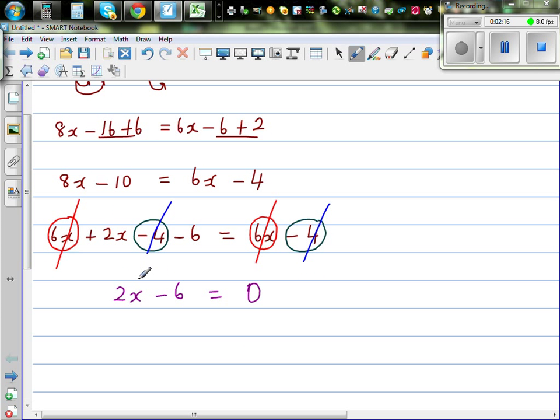Now you use your logic. This 2x minus 6 is equal to 0. So you need to ask this question: what take away 6 gives you 0? So this 2x stands for what. Well we know 6 minus 6 is 0, so logically 2x has to be 6.